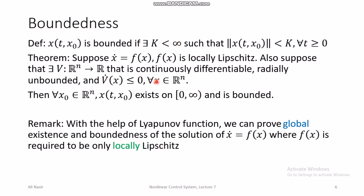The key advantage of using the Lyapunov function for predicting existence and boundedness of trajectories is that it only requires the function to be locally Lipschitz, whereas the existence and uniqueness theorem for global existence requires the function to be globally Lipschitz.